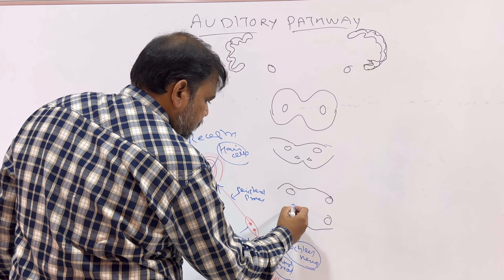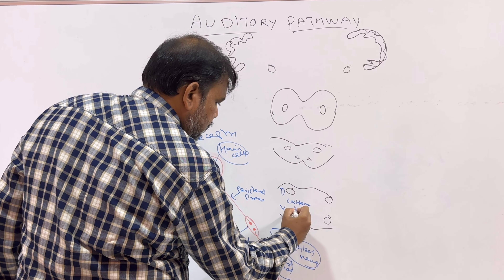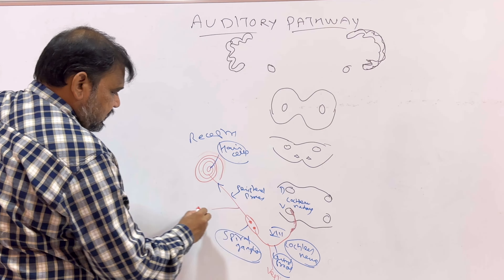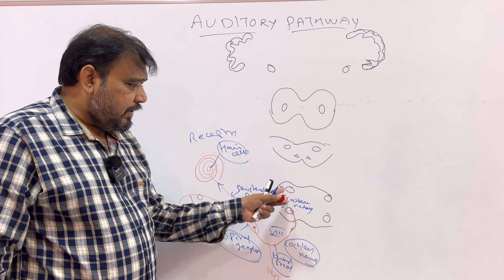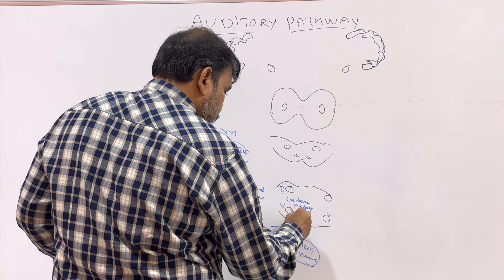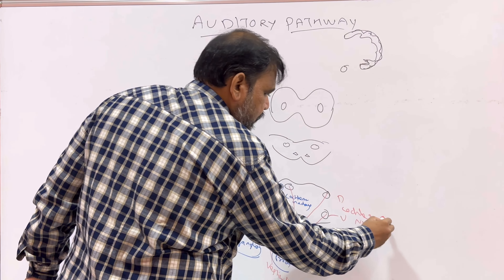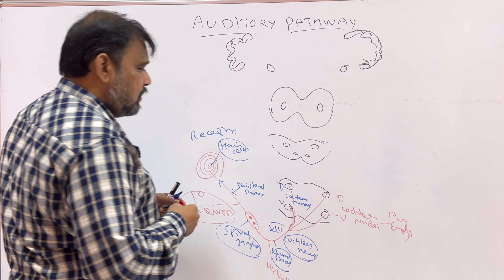The cochlear nerve is the one we are going to discuss in the auditory pathway. It terminates in the dorsal and ventral cochlear nucleus. This is considered the first order neuron in the auditory pathway. So the first order neuron starts from the hair cells, continues via the spiral ganglion, and ends in the dorsal and ventral cochlear nucleus — and remember, this is the same side.